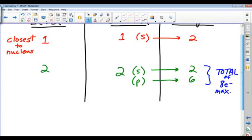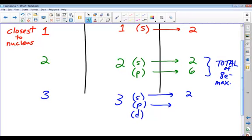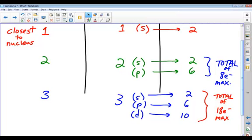Let's go to the third level. How many sub-levels do the third level have? Three. And what would we name those levels? S, P, and D. S can hold how many? Two. P can hold how many? Six. And D can hold ten. So how many do you get total in the third level? So the third level has a possibility of 18 max.